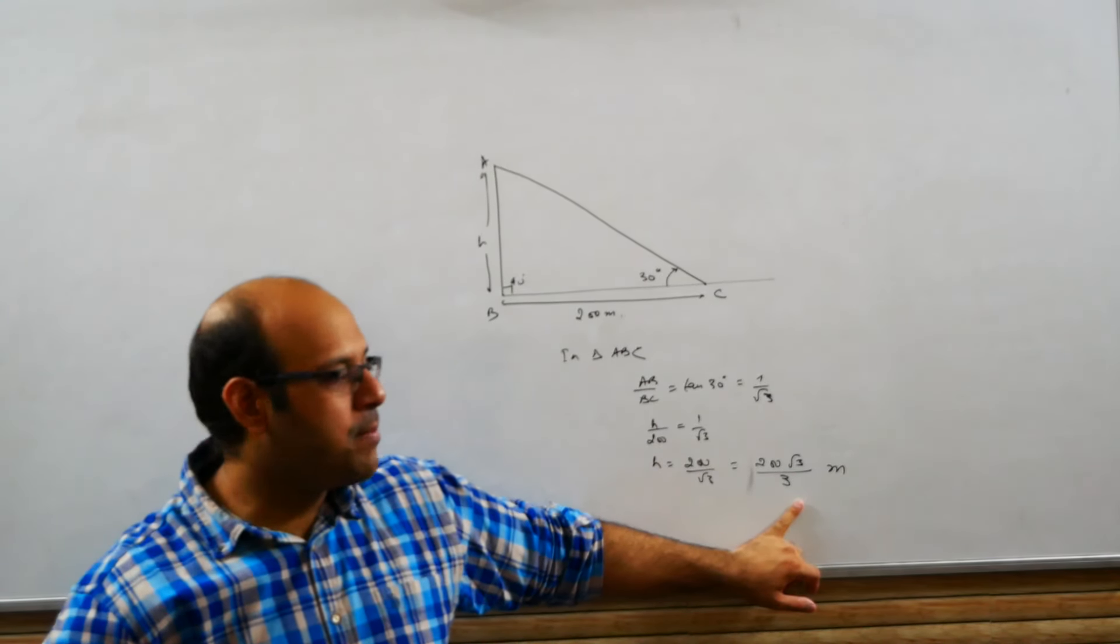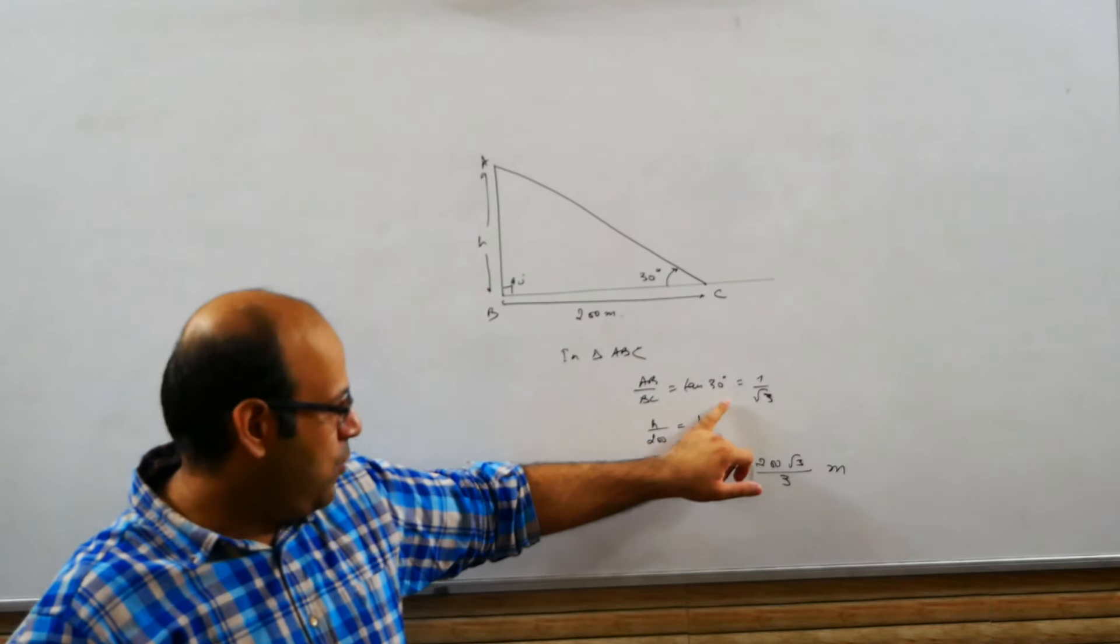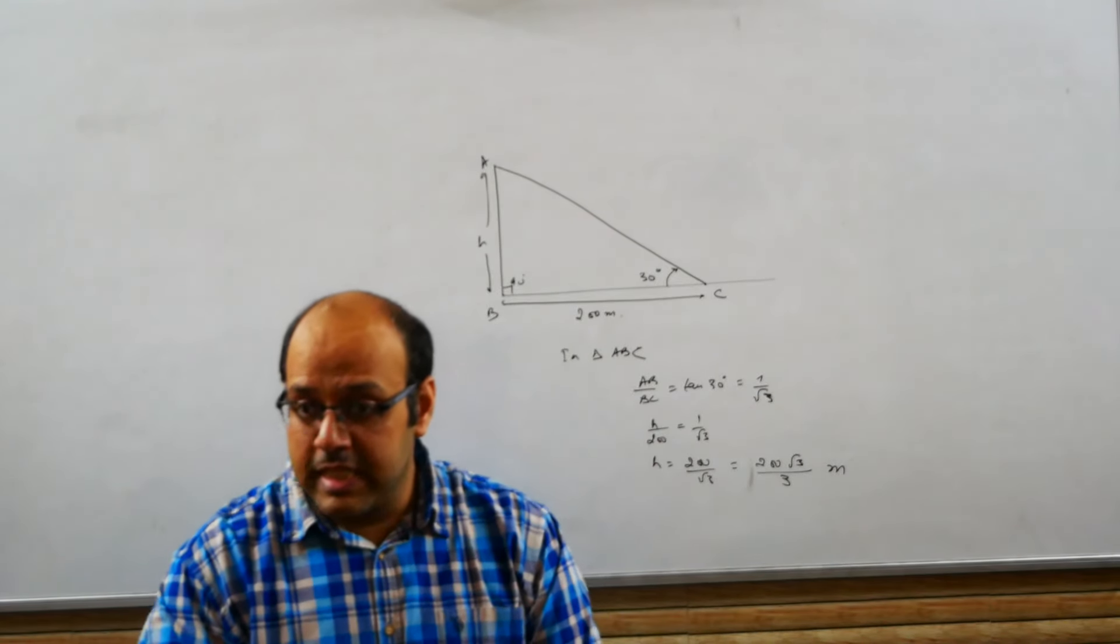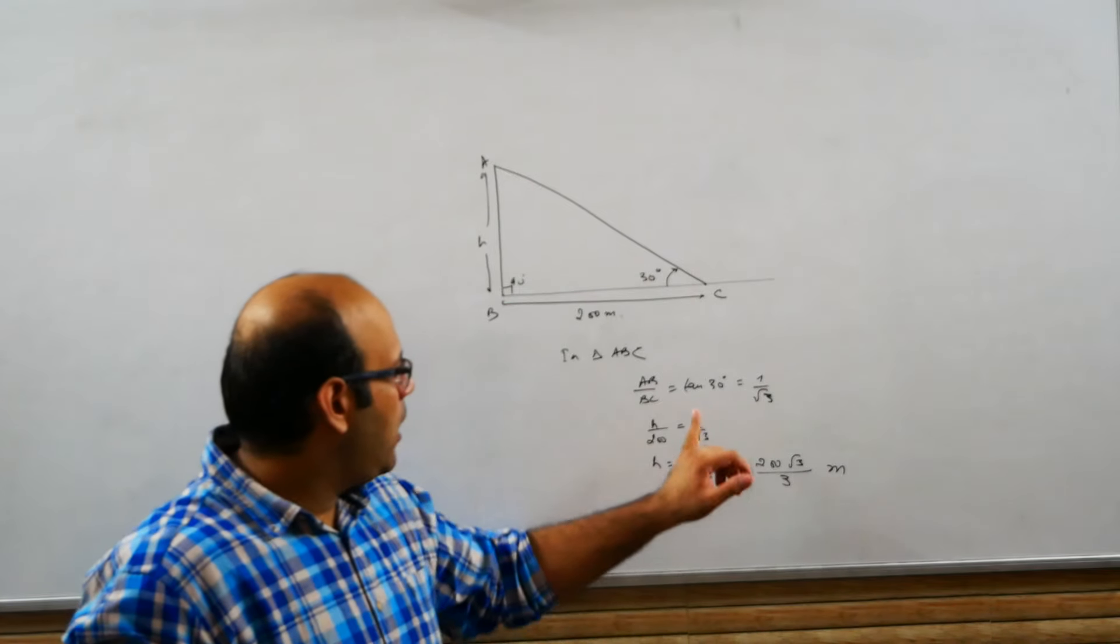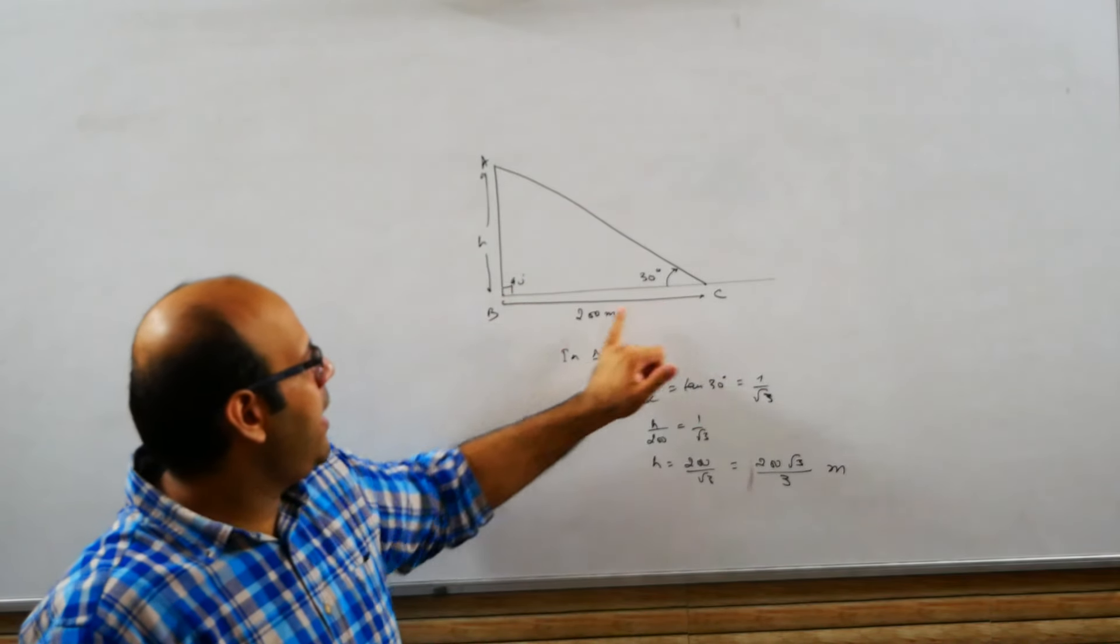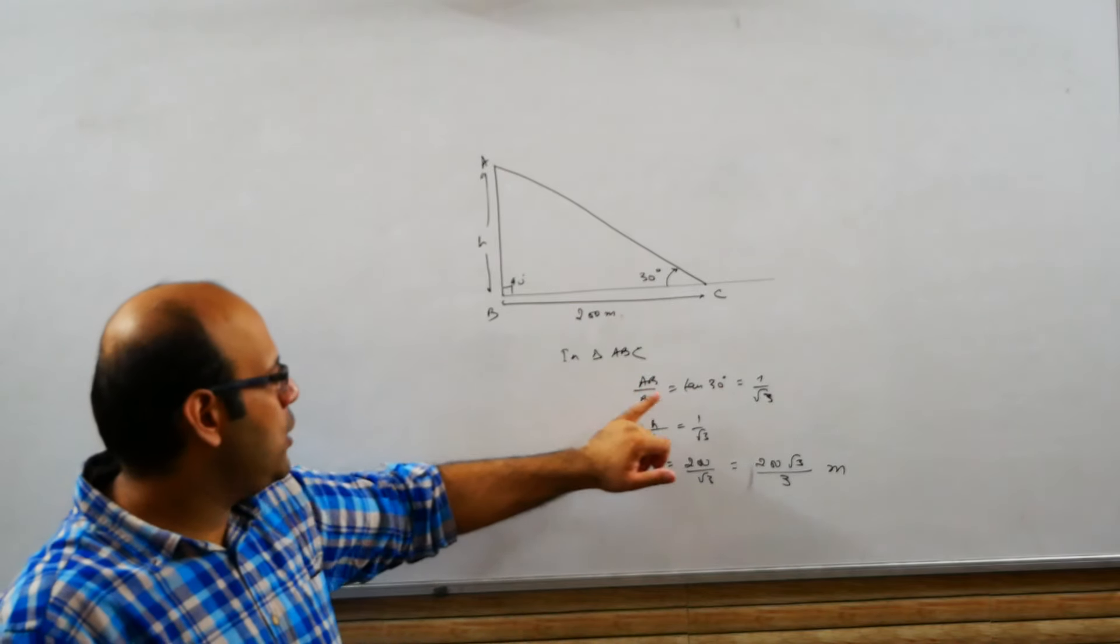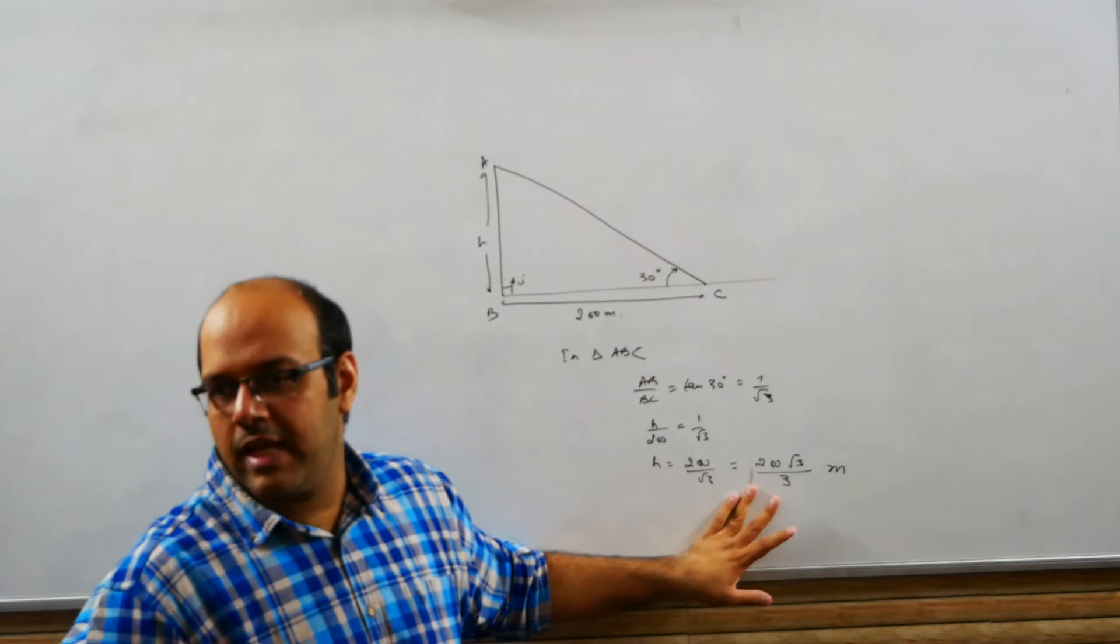Right? So, in this you have to use basic trigonometric ratios. Of course, values should be memorized - 30 degrees, 45 degrees, 60 degrees, 90 degrees. These values should be memorized, and you have to see which length is given and which needs to be found, what trigonometric ratio exists between them, use that and find the answer. Very simple chapter. Nothing much to do.